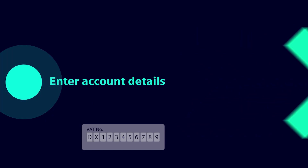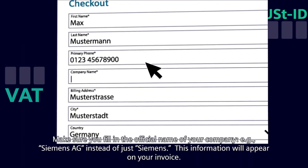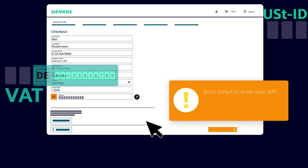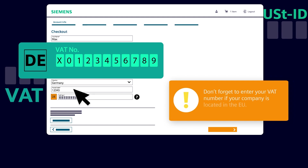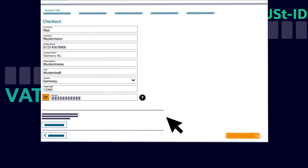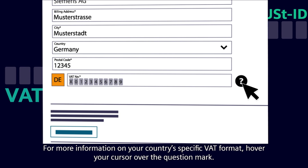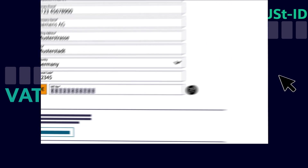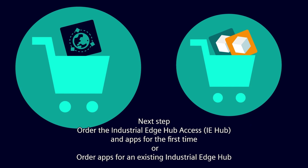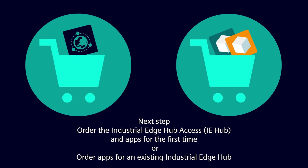Make sure you fill in the official name of your company — for example, 'Siemens AG' instead of just 'Siemens' — as this information will appear on your invoice. Don't forget to enter your VAT number if your company is located in the EU. Your country's prefix is filled in automatically. For more information on your country's specific VAT format, hover your cursor over the question mark.